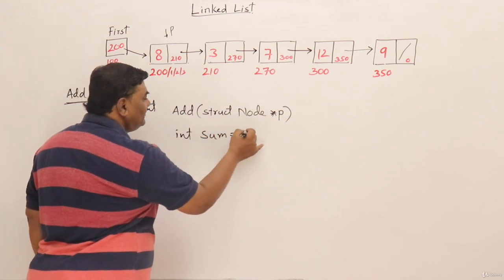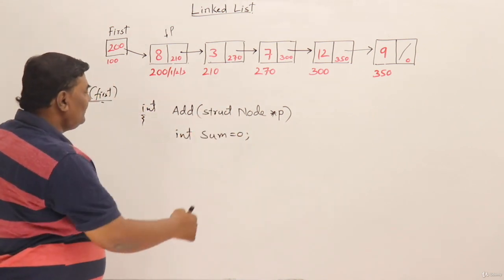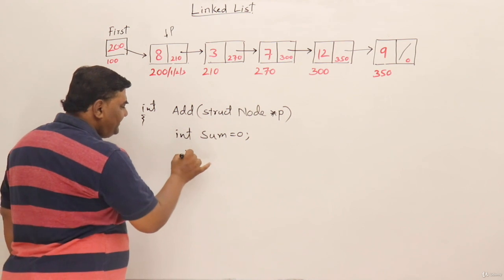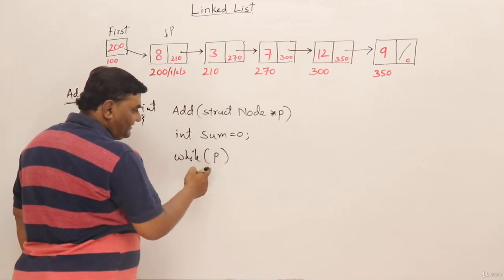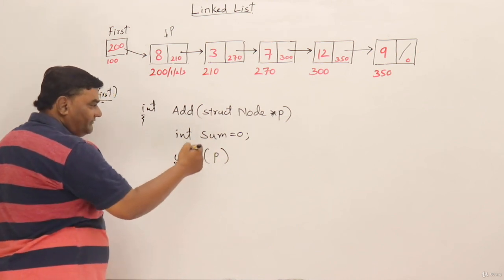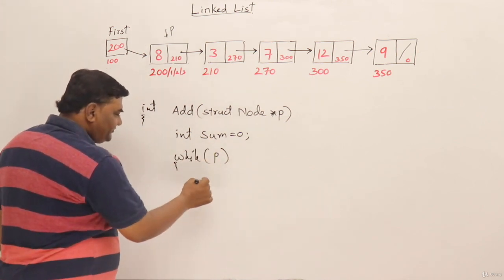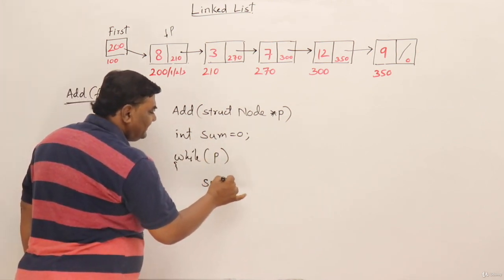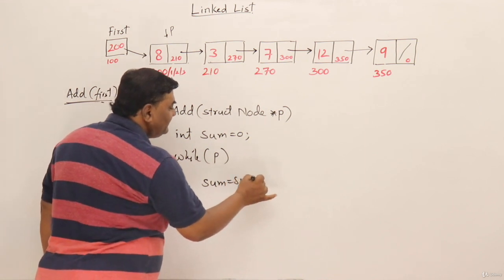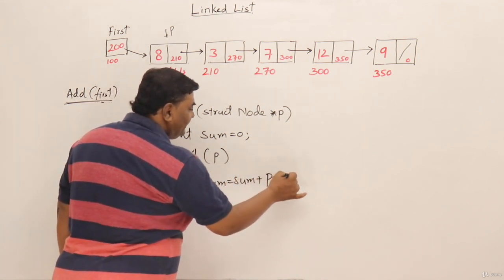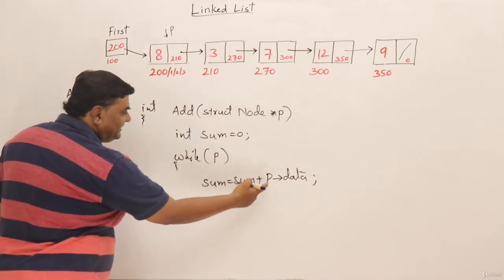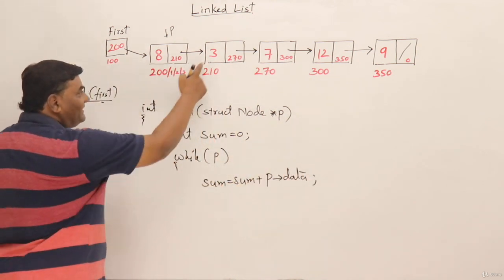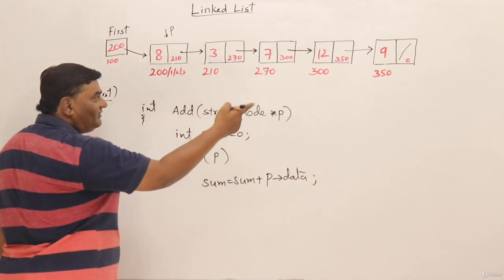How to traverse all these? Using a loop. While P - I can write like this - this means P not equal to null. And every time what I should do: sum assign sum plus P's data. So I should add - first time 8 will be added to this one and next time 3 will be added. Like that I want all of them to be added.